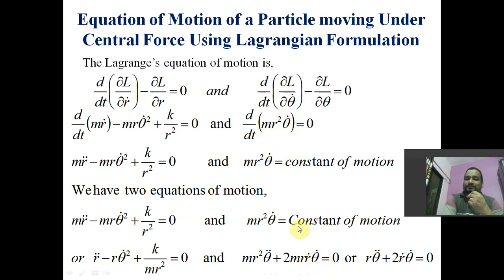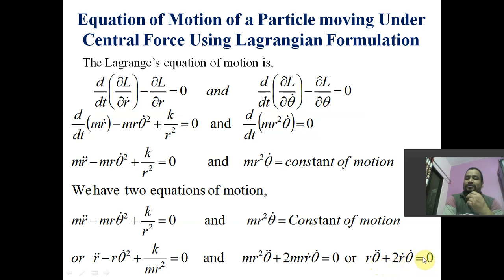Taking the time derivative of m r squared theta-dot equal to constant gives m r squared theta-double-dot plus 2m r r-dot theta-dot equal to 0. Dividing by m and by r, we obtain r theta-double-dot plus 2 r-dot theta-dot equal to 0.